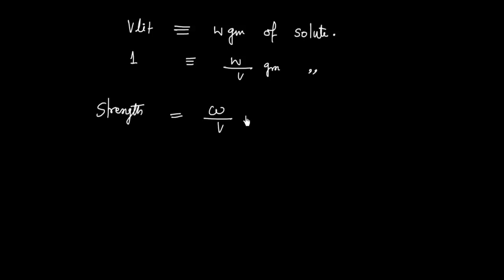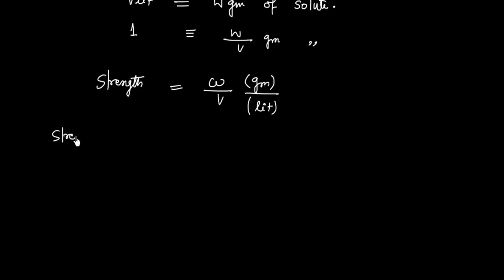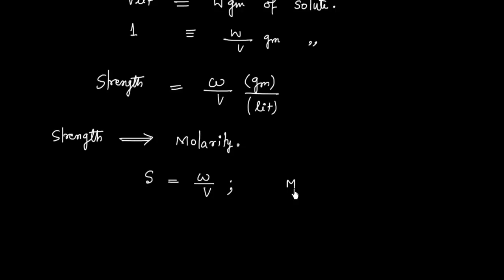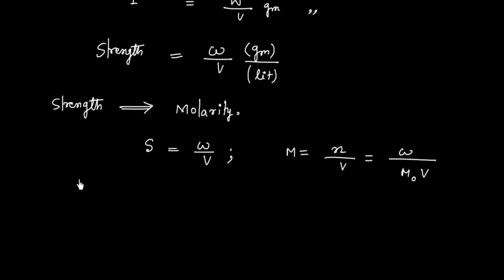So the formula is: Strength = W/V, where W is taken in grams and V is taken in liters. We can also find a relationship between strength and molarity. Let strength be S, so S = W/V. We know molarity = number of moles / volume, and number of moles = W / M₀, where M₀ is the molecular weight of the solute.